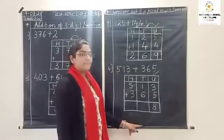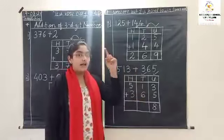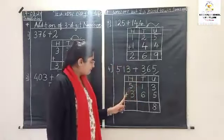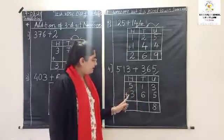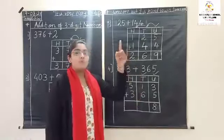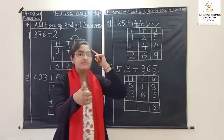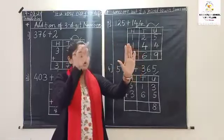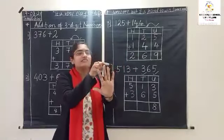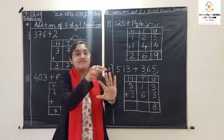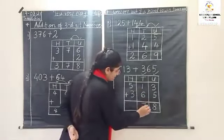After completing units place, come to tens place. One plus six — keep one in mind and remove six fingers. After one: two, three, four, five, six and seven. So the answer is one plus six is equal to seven.